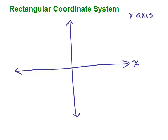And the vertical number line is called the y axis. So we have an x axis and a y axis. One is horizontal, one is vertical.